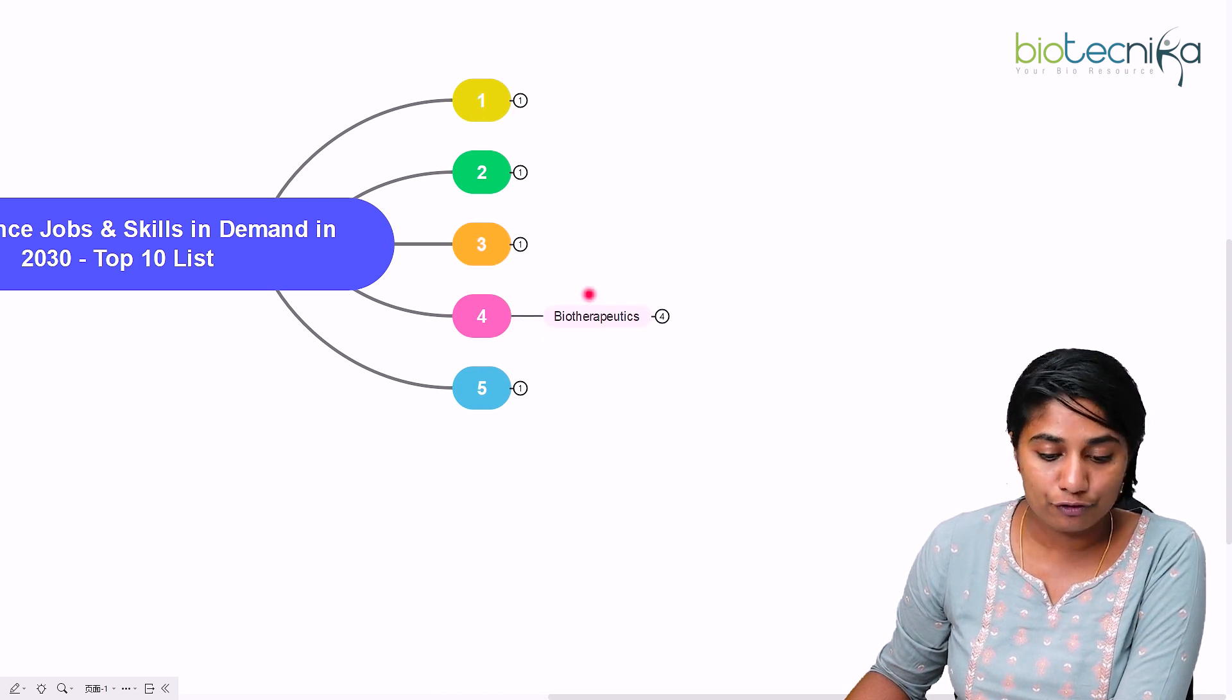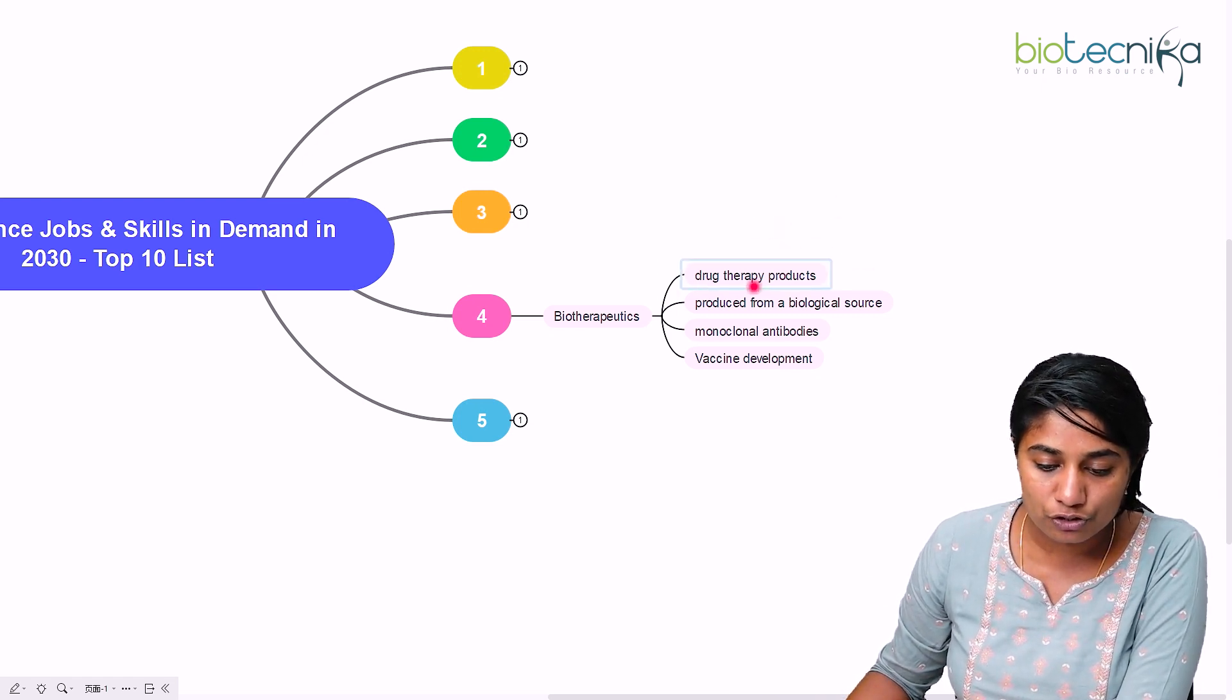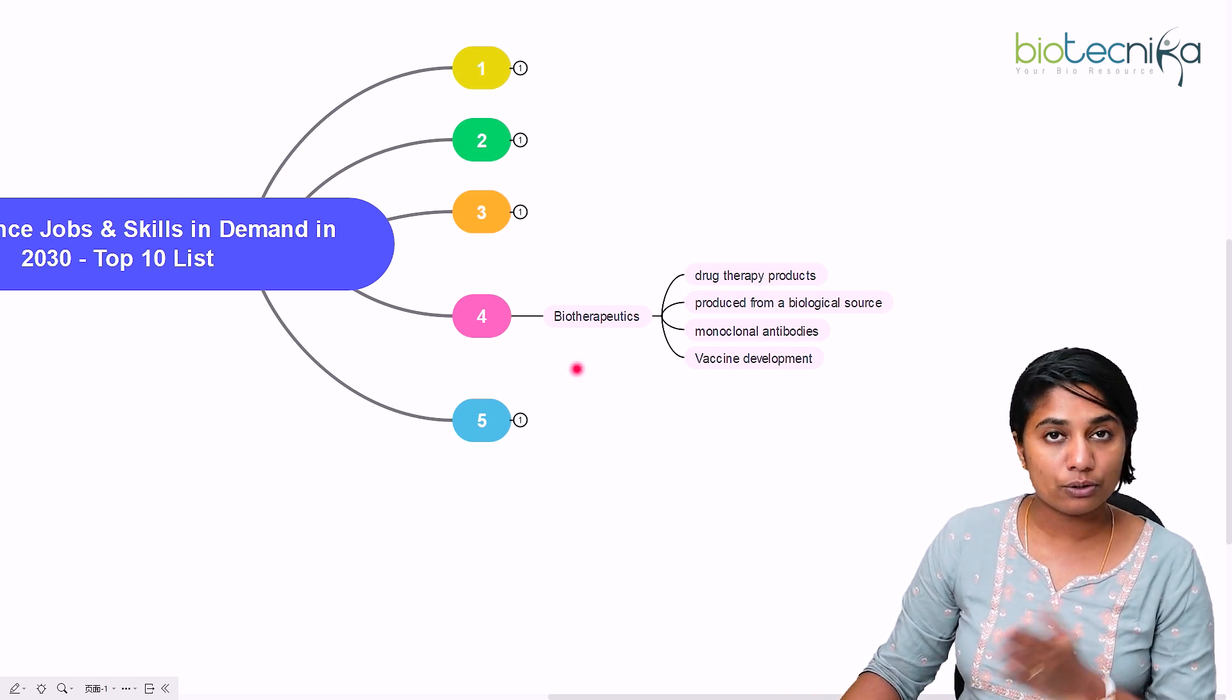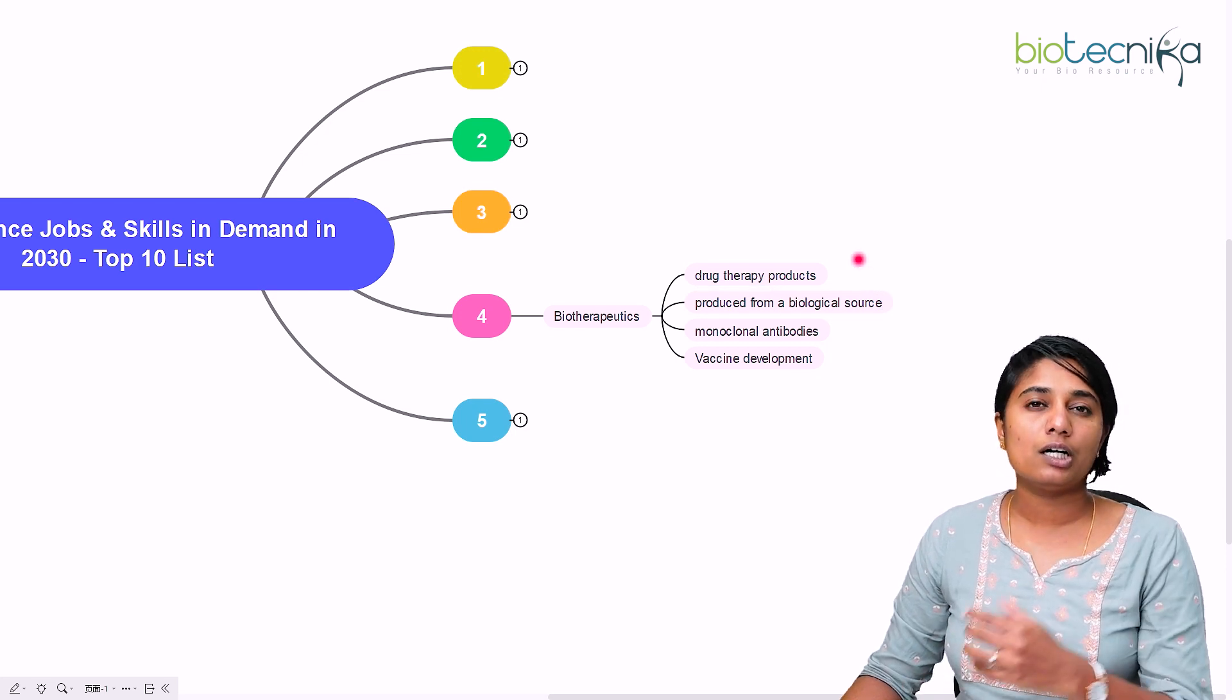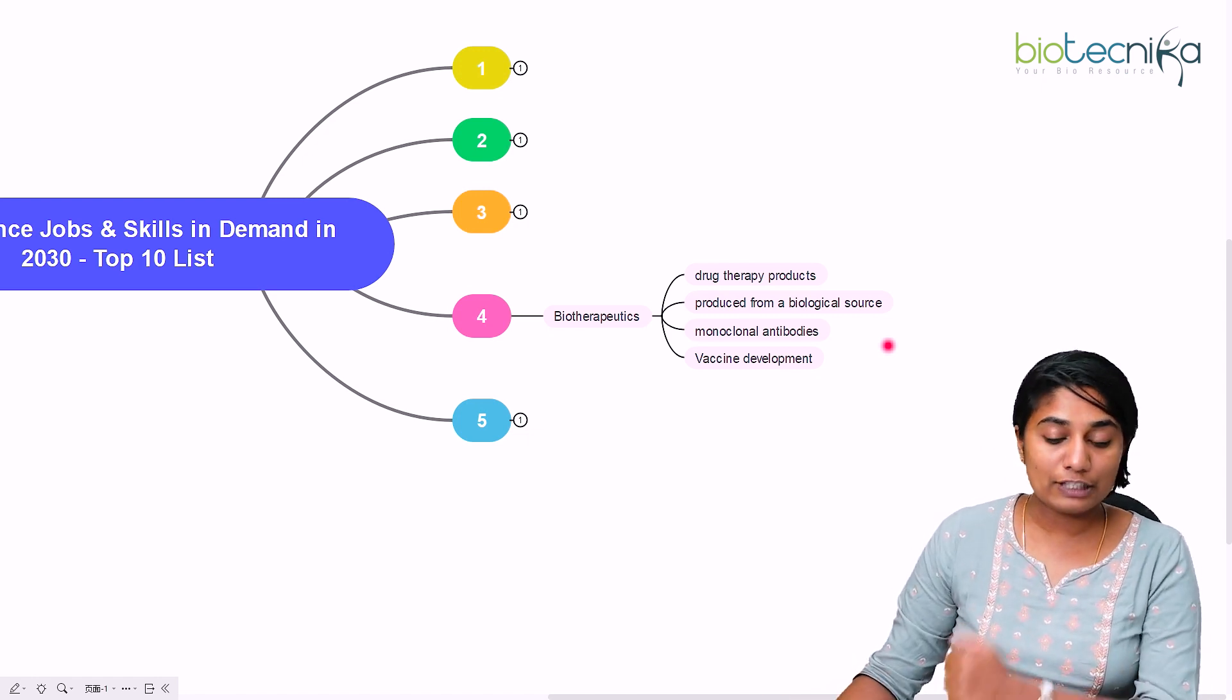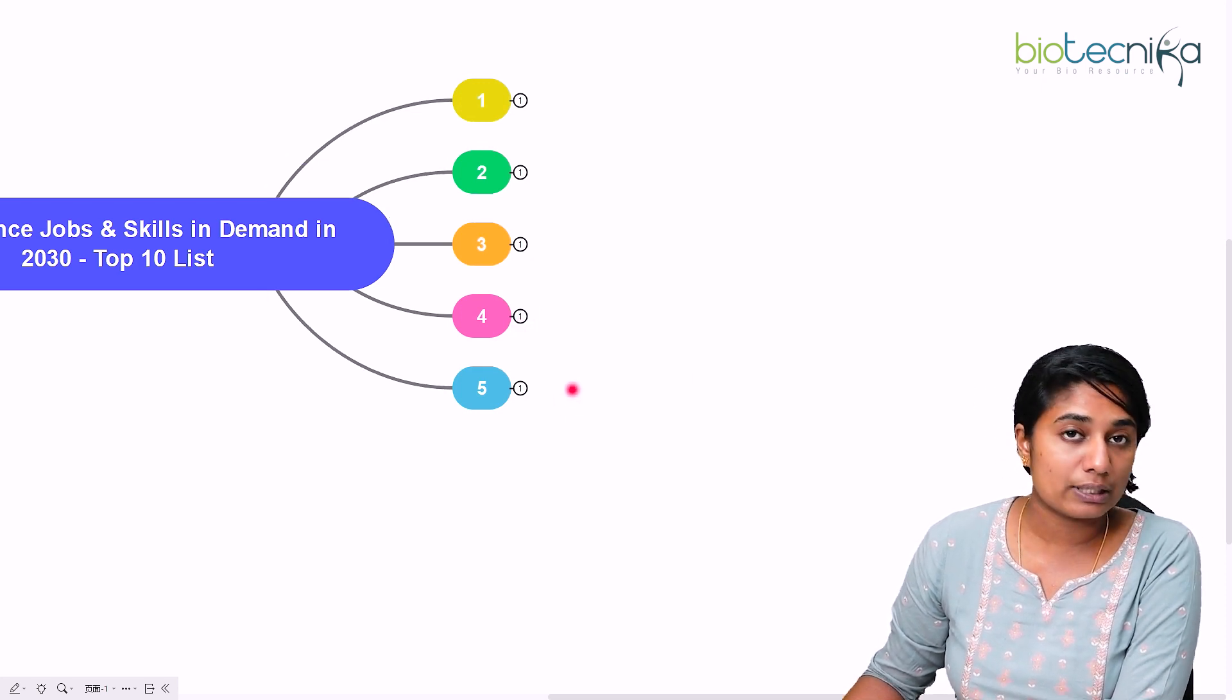The fourth field that I have for all of you is biotherapeutics. Biotherapeutics is a relatively newer area that has come up. These are basically drug therapy products that are extracted or produced from a biological source. That's the reason they call it biotherapeutic. One very common example of biotherapeutic is monoclonal antibodies. Monoclonal antibodies are very widely used in today's era in the medicine field and have also helped in vaccine development. Vaccine development and biotherapeutics is something that is definitely booming and will boom for the next 10 years.